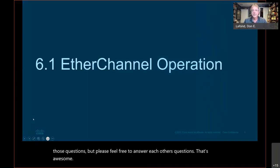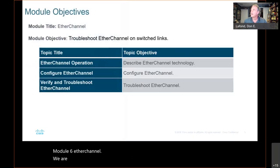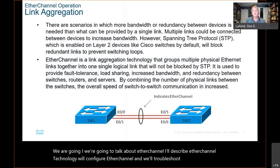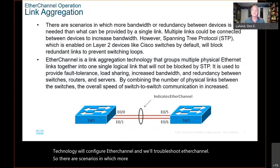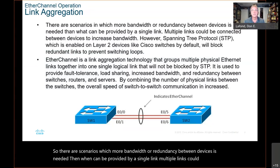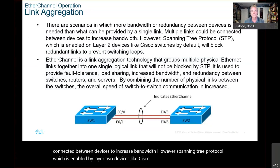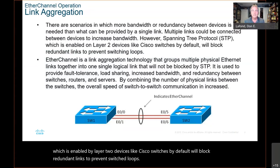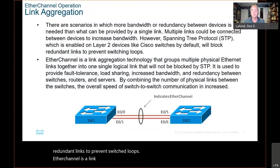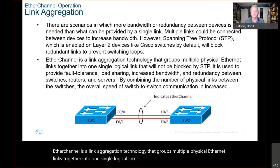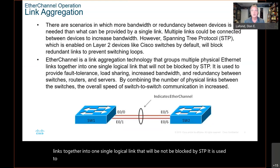Module 6, EtherChannel. We are going to talk about EtherChannel. I'll describe EtherChannel technology, we'll configure EtherChannel, and we'll troubleshoot EtherChannel. There are scenarios in which more bandwidth or redundancy between devices is needed than can be provided by a single link. Multiple links could be connected between devices to increase bandwidth. However, Spanning Tree Protocol, which is enabled by Layer 2 devices like Cisco switches by default, will block redundant links to prevent switched loops. EtherChannel is a link aggregation technology that groups multiple physical Ethernet links together into one single logical link that will not be blocked by STP. It is used to provide fault tolerance, load sharing, increased bandwidth, and redundancy between switches, routers, and servers.